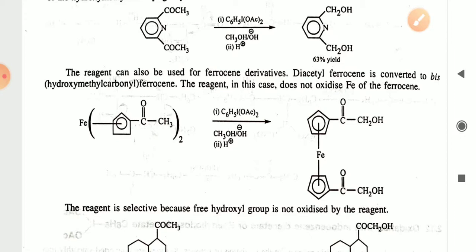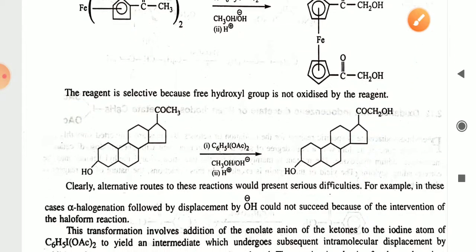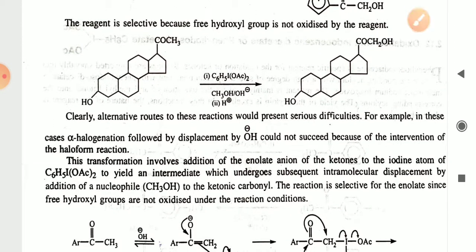The diacetyl ferrocene is converted to the bis(hydroxymethylcarbonyl) product. This reagent does not oxidize the iron of the ferrocene. Here you can see the ferrocene derivative with the methylcarbonyl group; in presence of the reagent it will give the hydroxymethylcarbonyl ferrocene. The reagent is selective because free hydroxyl groups are not oxidized by the reagent.